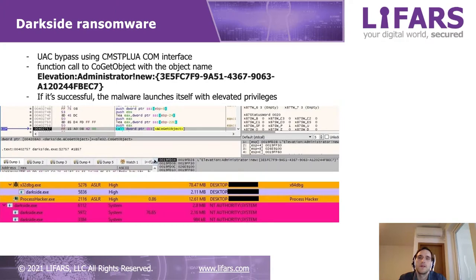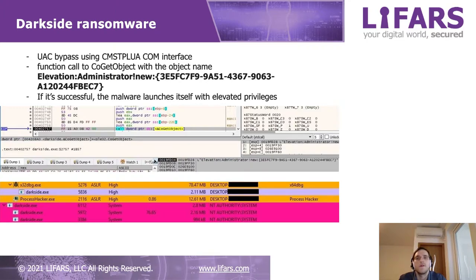If the malware runs with low-level privileges, it will try to perform a UAC bypass using that interface. Basically there is a function called CoGetObject with an elevated object name. If this method is successful, the malware will start itself with elevated privileges, as we can see in the second picture.